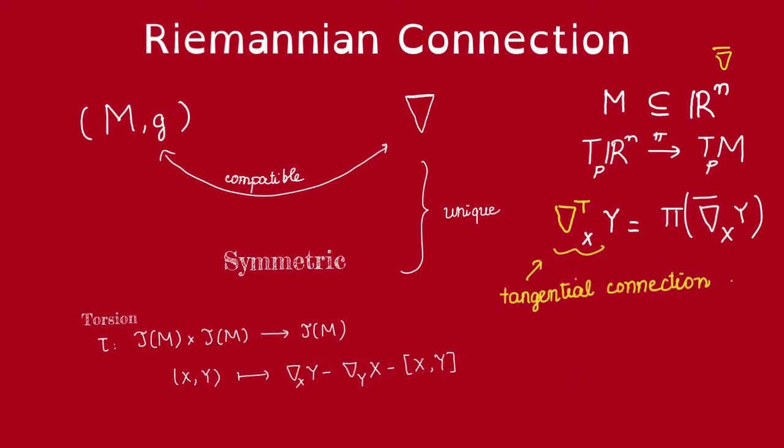Now it turns out that this tangential connection on any sub-manifold of R^n is uniquely determined by two properties. One is that it's compatible with the induced Riemannian metric, and second is that it's symmetric.